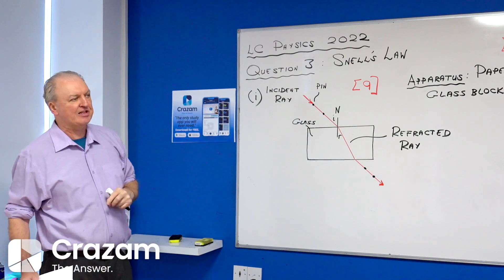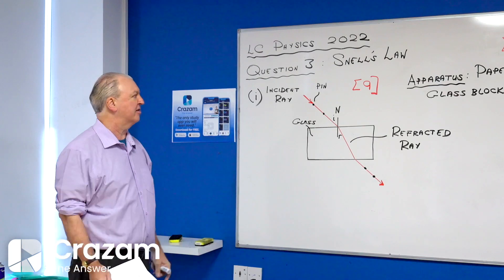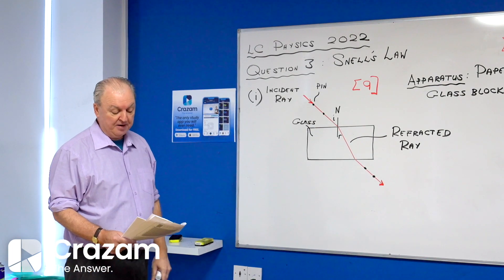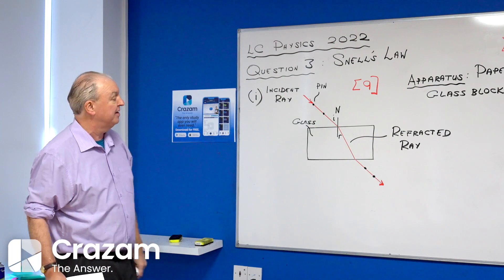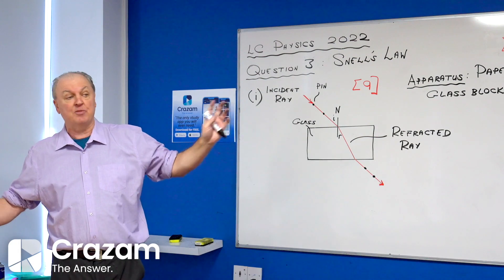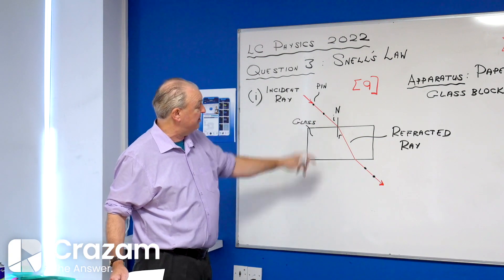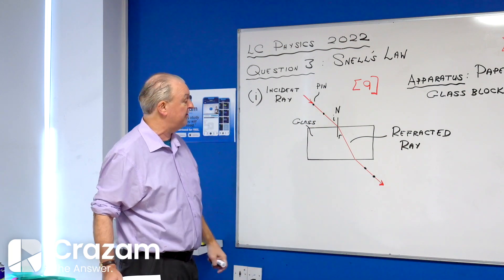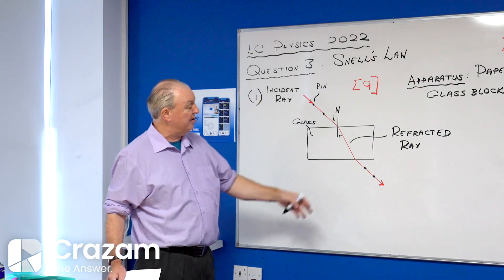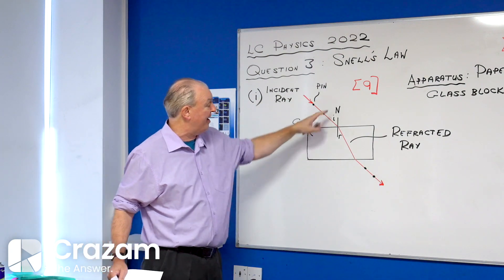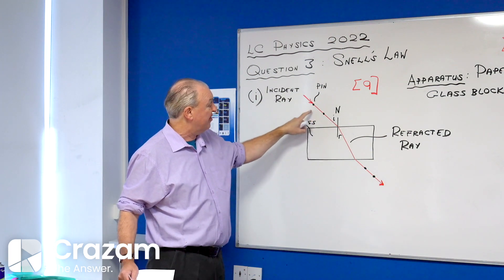The theme is Snell's law, a very popular question. The first part asks you to draw a labeled diagram of how the apparatus is arranged. I do it with a glass block and two pins on this side, two pins on the other side. Label everything: your glass block, your refracted ray, your incident ray, your normal, and your angles of incidence and refraction.